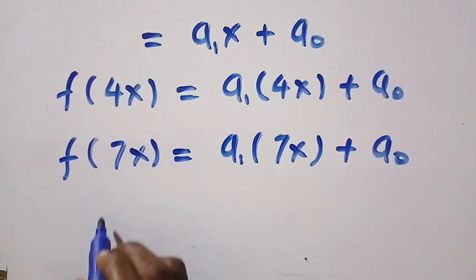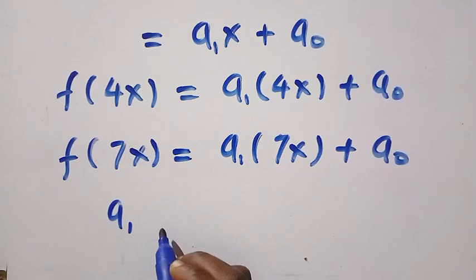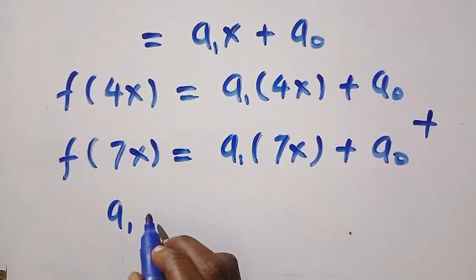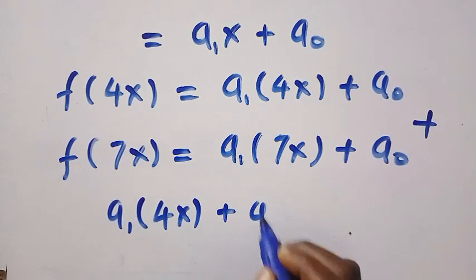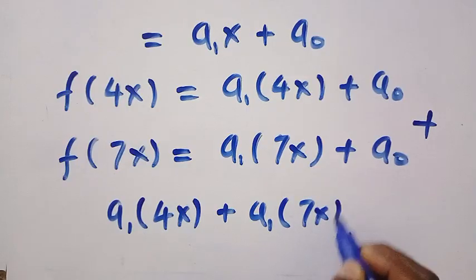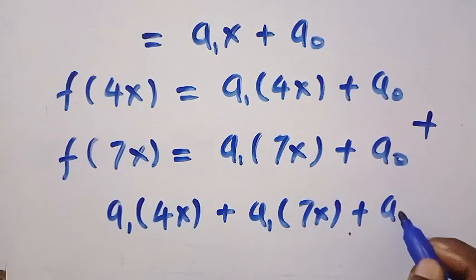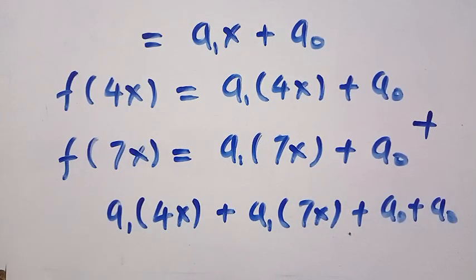So by adding these two equations, we are going to have a_1, that is, we are going to add, so a_1 into bracket of 4x plus a_1 into bracket of 7x plus a_0 plus a_0. Everything equals x plus 1.